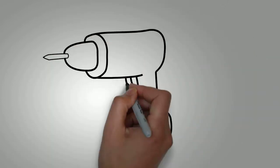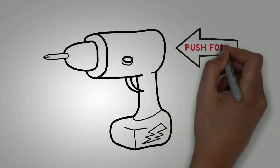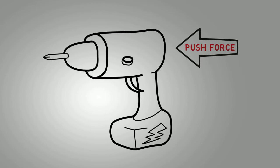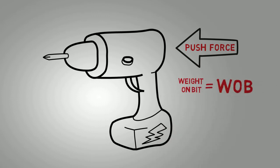In some ways, drilling a well is just like using a handheld drill. In order to make a hole, you have to push the bit into whatever you're drilling. In oil and gas drilling, we call this weight on bit, commonly abbreviated as W-O-B.